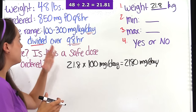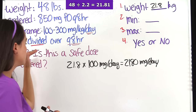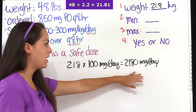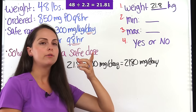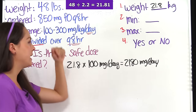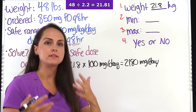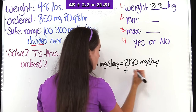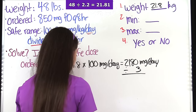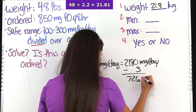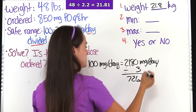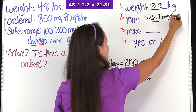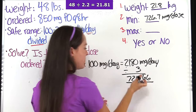This daily dose needs to be divided every eight hours. There are 24 hours in a day — divided by 8 — that gives us 3 doses. So the patient will have three total doses spaced every eight hours. We divide 2,180 by 3, which gives us 726.66 repeating, rounded to the nearest tenth: 726.7 milligrams per dose. That is the minimum they can have per dose.